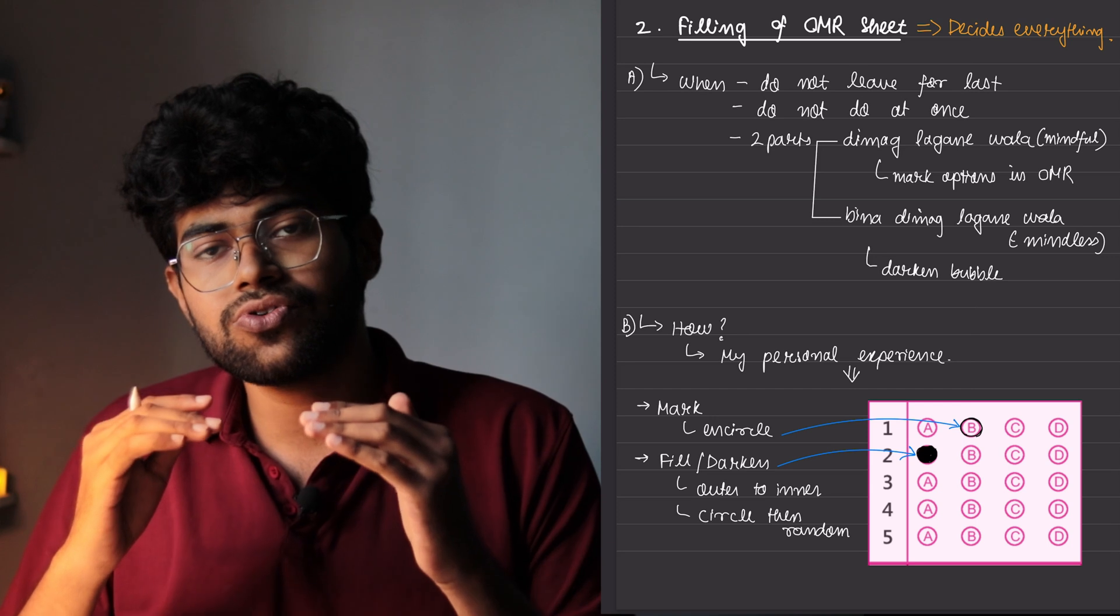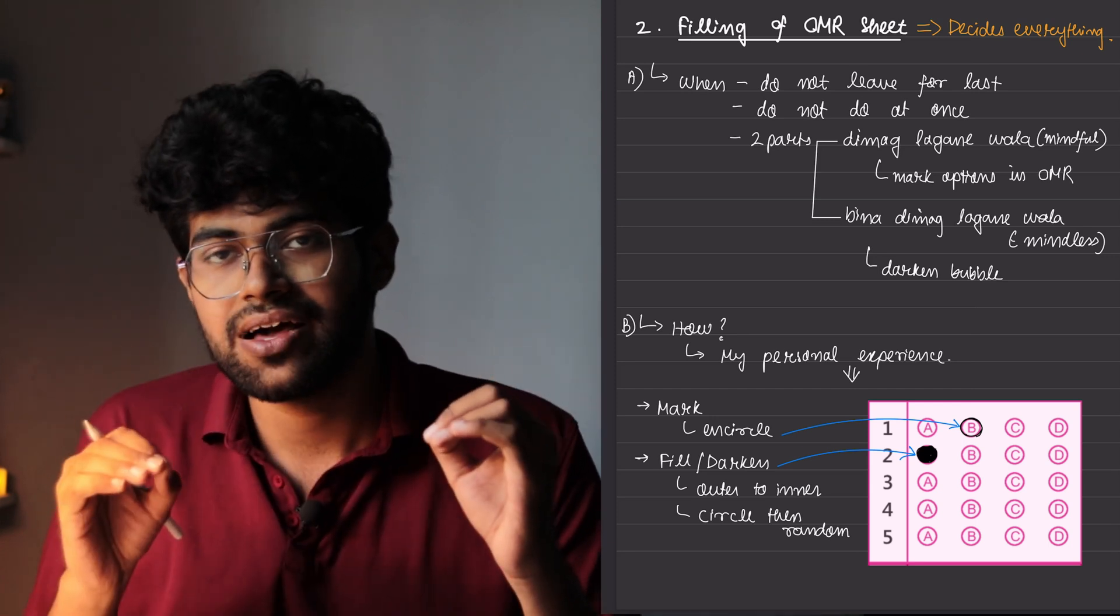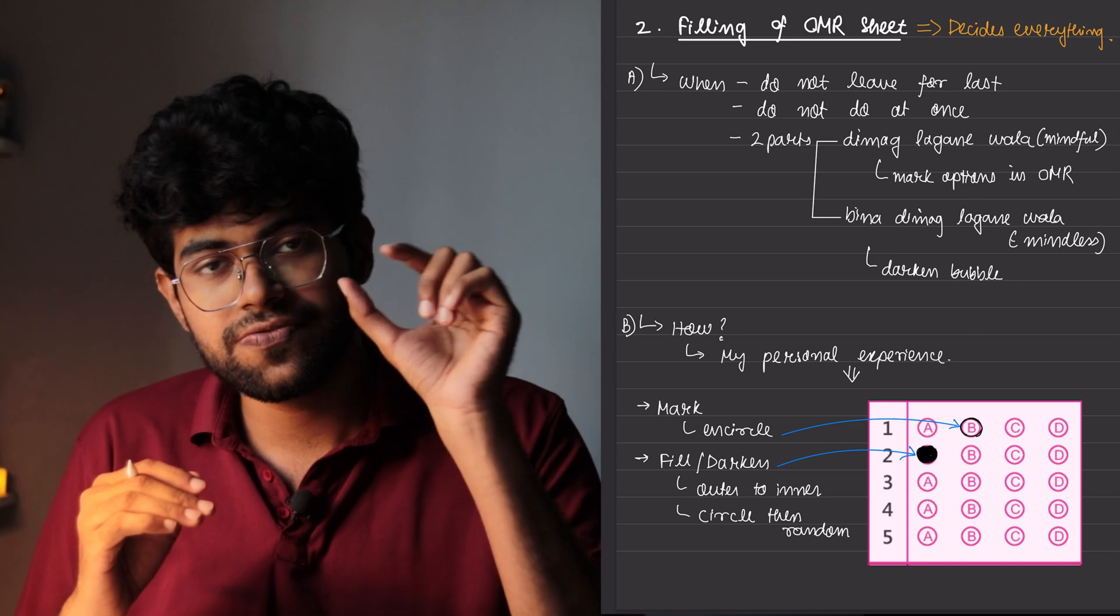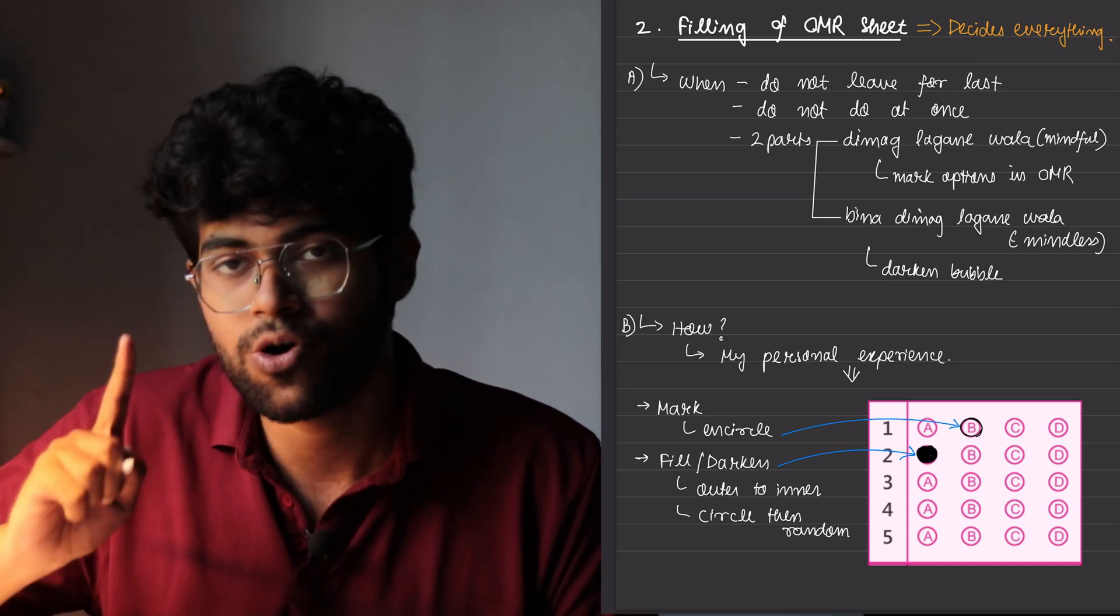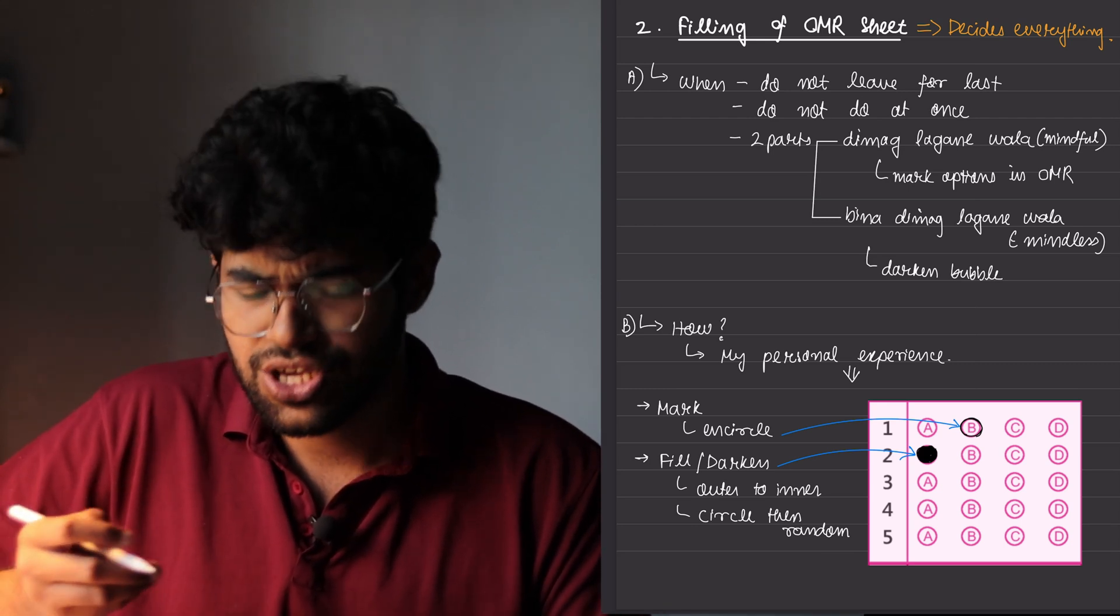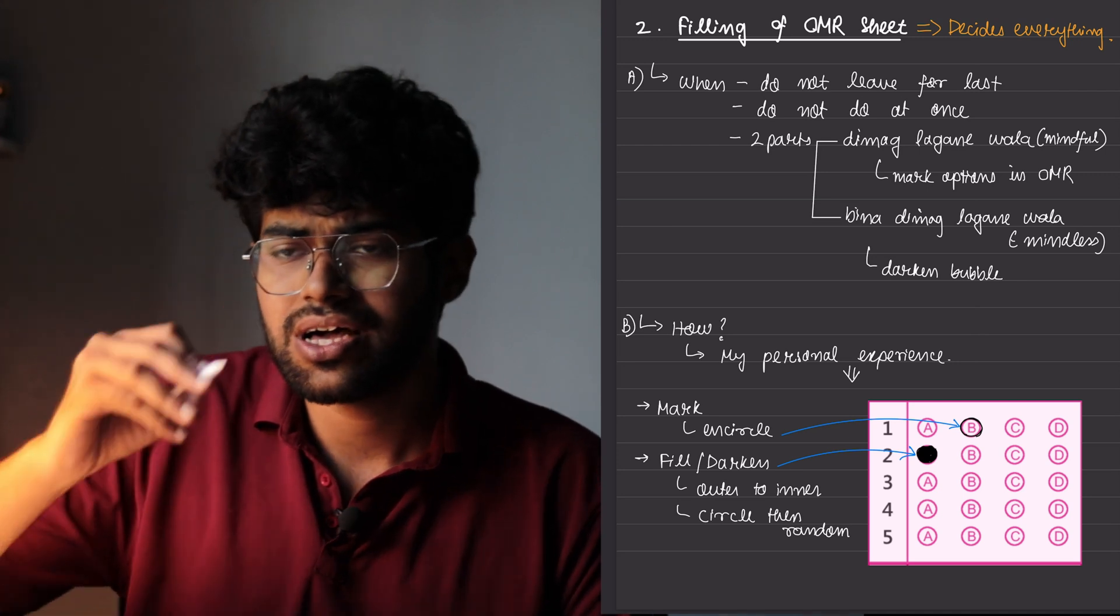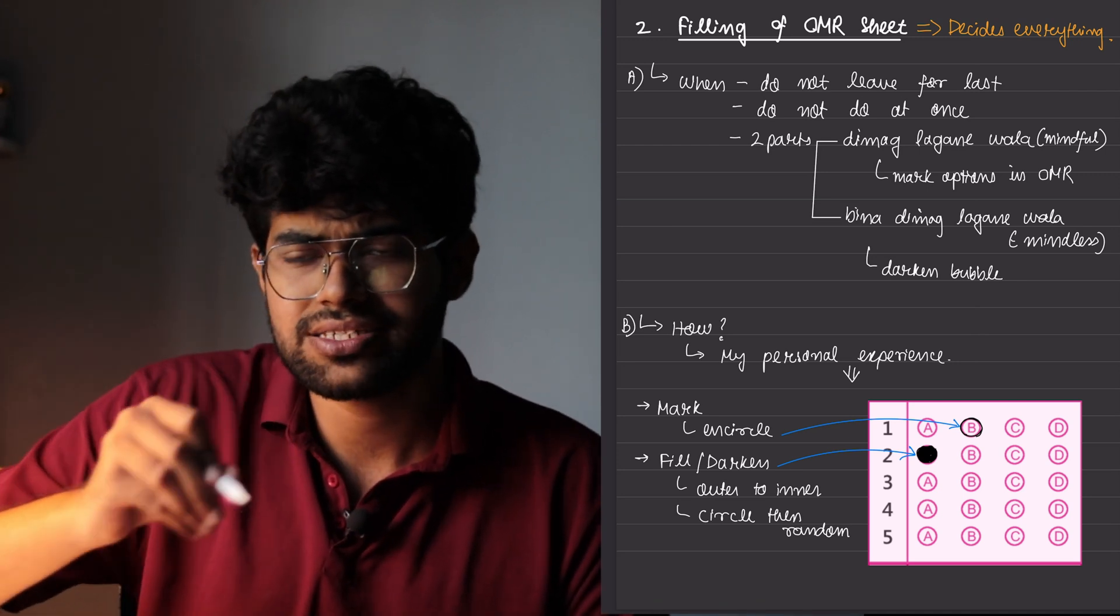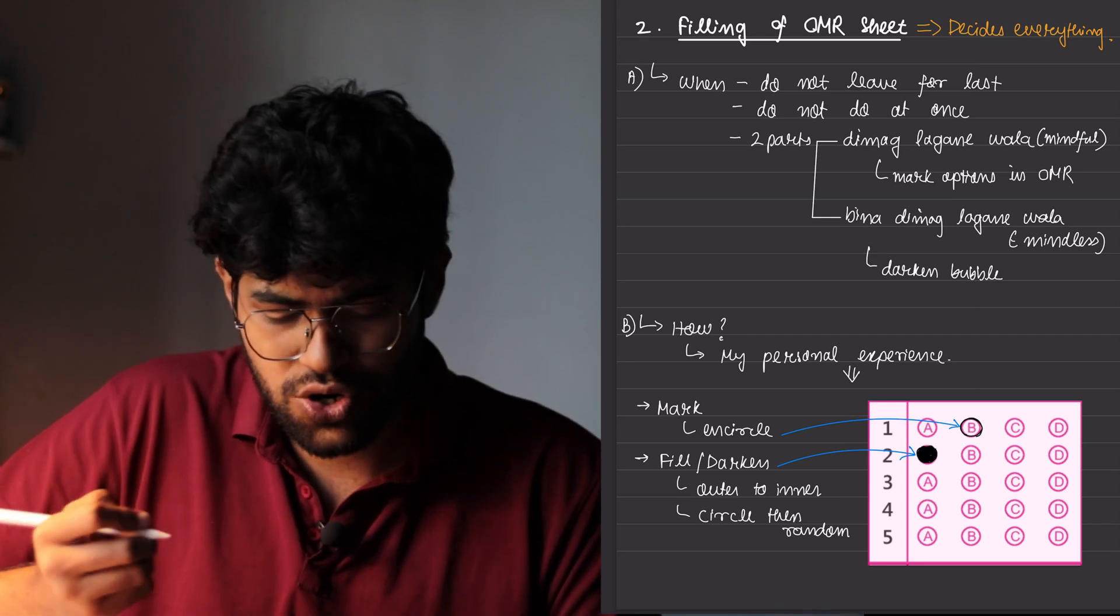Only take those four to five questions that are in a sequence without any gap. And remember those sequence with the first question number so that you don't get even a single OMR wrong, right? So this was the mindful part. But after this, you only have to darken those bubbles and you can be completely mindless. You see them that you have marked this and you just fill it, right?